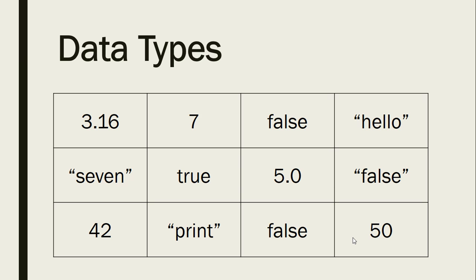Next, we've got 7. What kind of variable is that? If you said integer, you're correct. Again, no decimal.